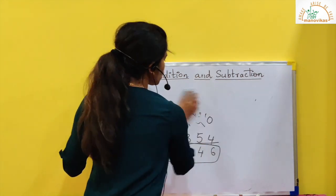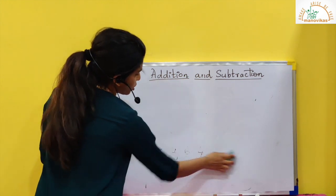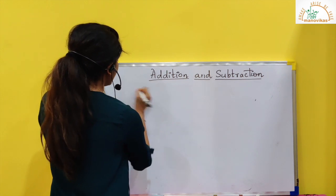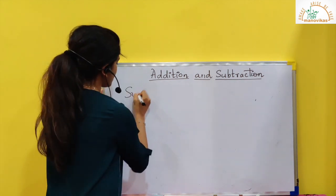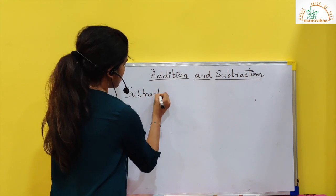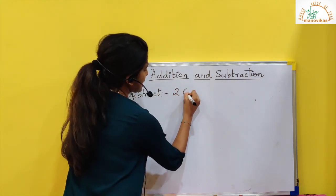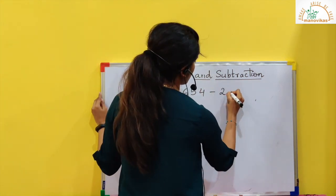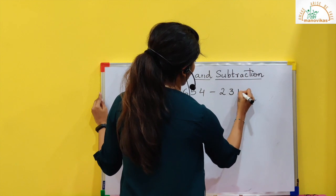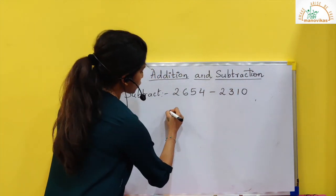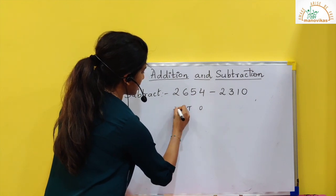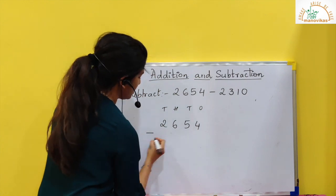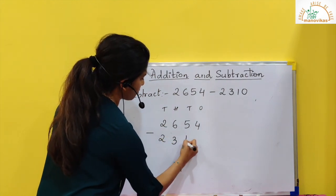Now if you want to know if your subtraction is correct or not, there is one method. Let's take some numbers. Suppose I want to do a subtraction: subtract 2, 6, 5, 4 minus 2, 3, 1, 0. So if I put the place value — 1s, 10s, 100, 1000 — then 2, 6, 5, 4 minus 2, 3, 1, 0.